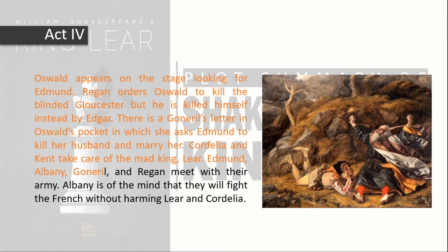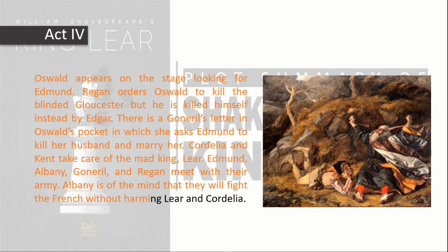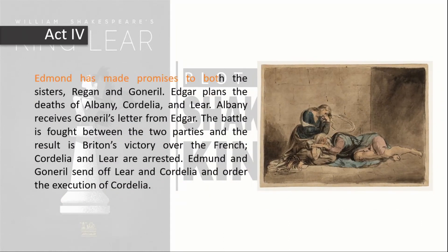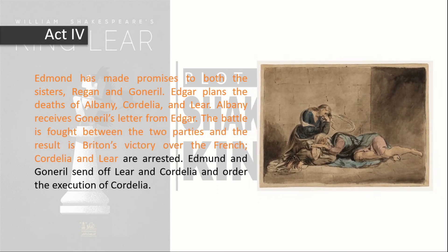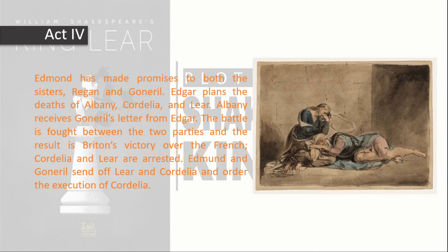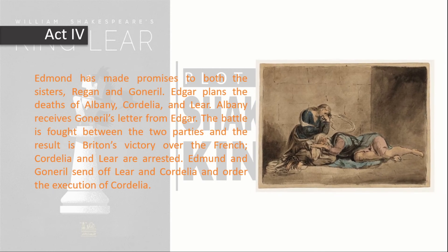Cordelia and Kent take care of the mad king Lear. Edmund, Albany, Goneril, and Regan meet with their army. Albany is of the mind that they will fight the French without harming Lear and Cordelia. Edmund has made promises to both sisters, Regan and Goneril. There is a letter found in Oswald's pocket in which Goneril asks Edmund to kill her husband and marry her. Albany receives this letter from Edgar. The battle is fought and Britain is victorious over the French. Cordelia and Lear are arrested, and Edmund and Goneril order the execution of Cordelia.